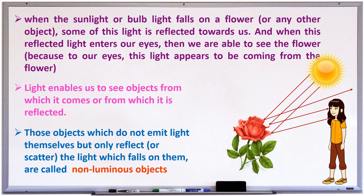Can you give some examples for non-luminous objects? Yes, flower, chair, table, stone, tree, etc.